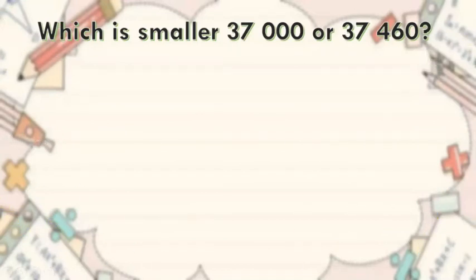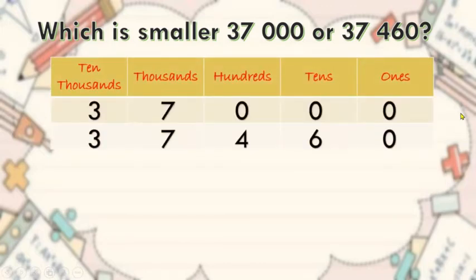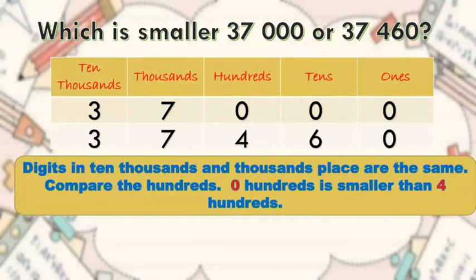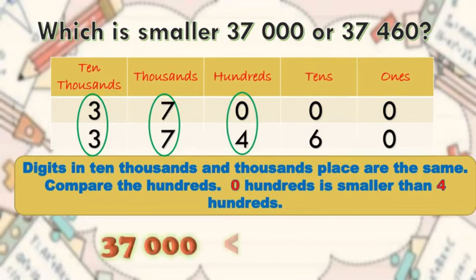Let's have another example. Which is smaller, 37,000 or 37,460? In this example, digits in the ten thousands and thousands place are the same, so we have to move on and compare the next digits, which are the hundreds place. Zero hundreds is smaller than four hundreds. Therefore, 37,000 is less than 37,460.